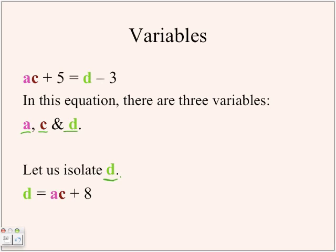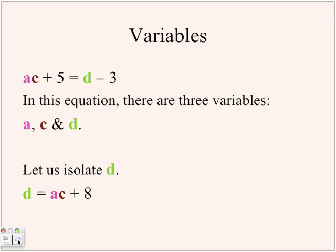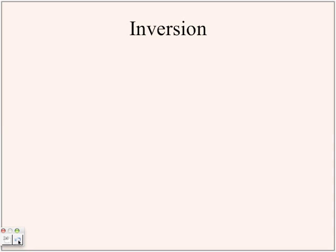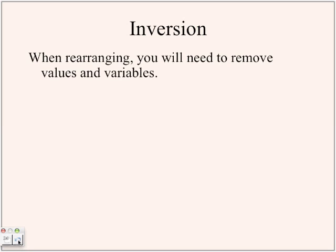You're going to add 3 to each side, so that would be d minus 3 plus 3, which cancels out, and then you just end up with d equals ac plus 5.